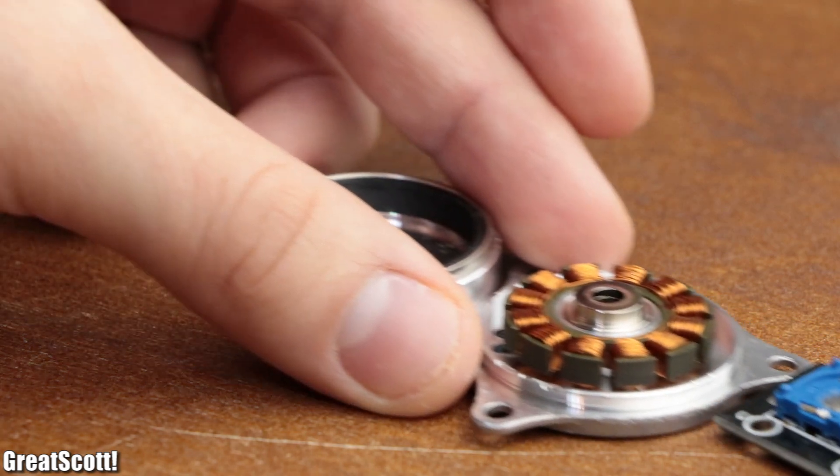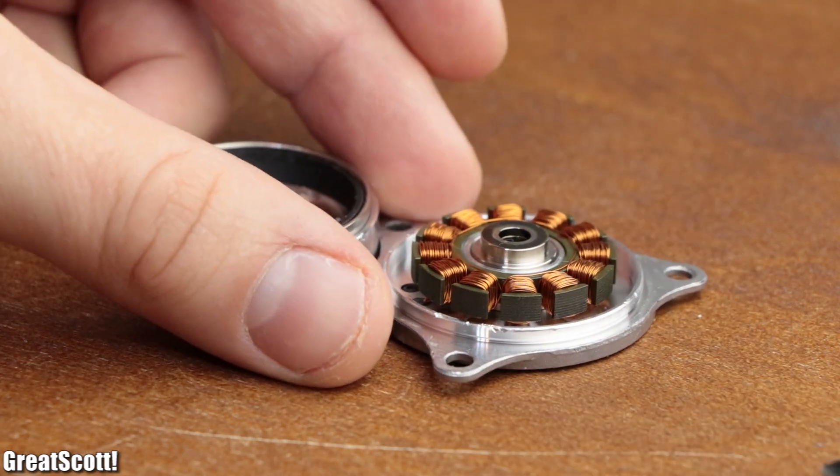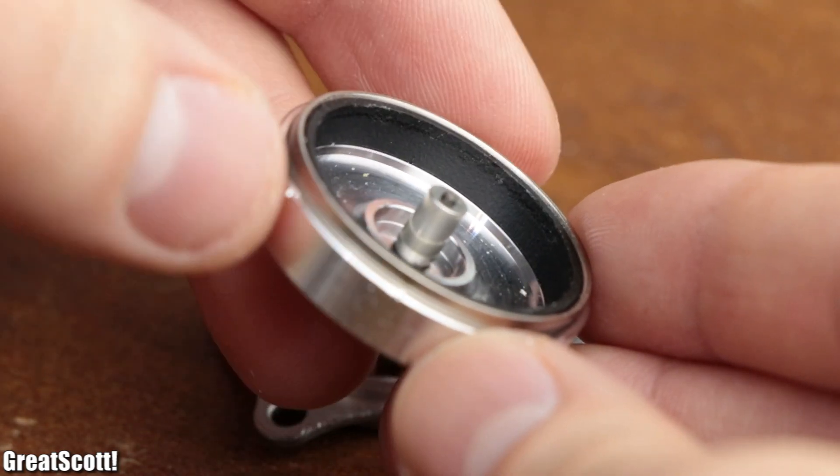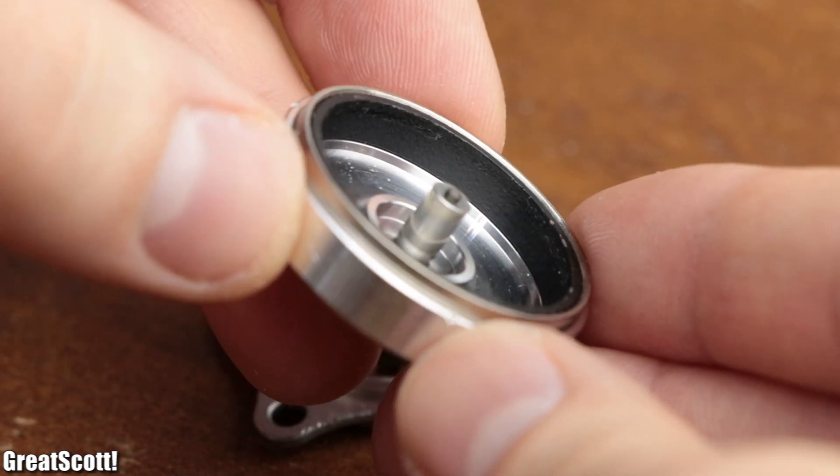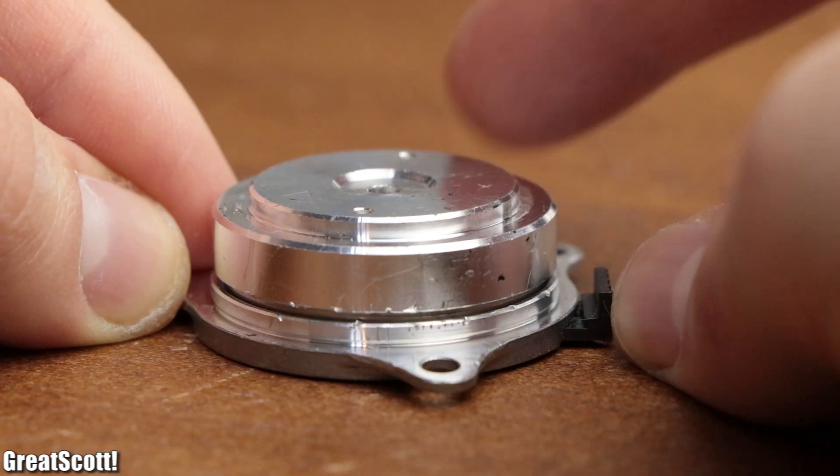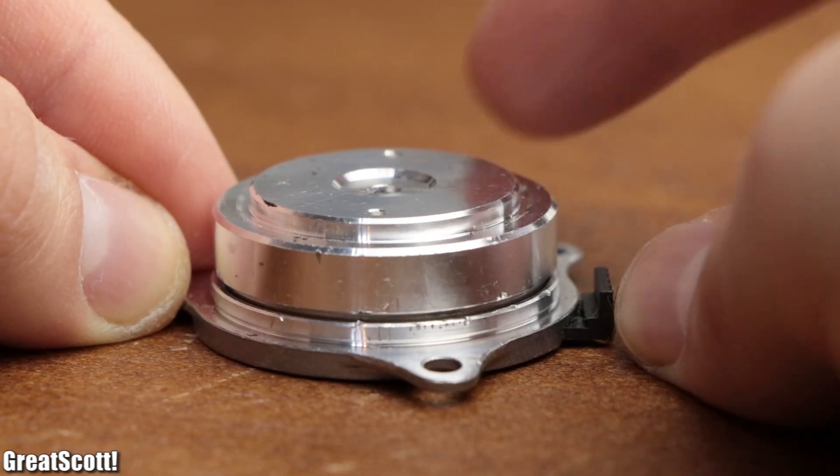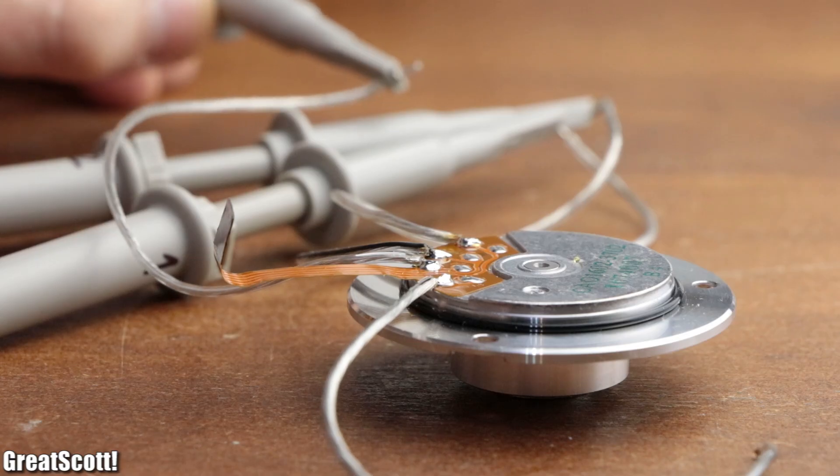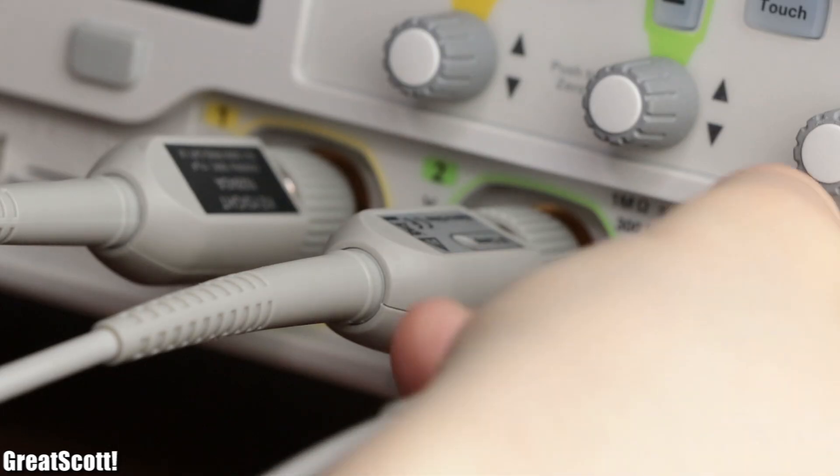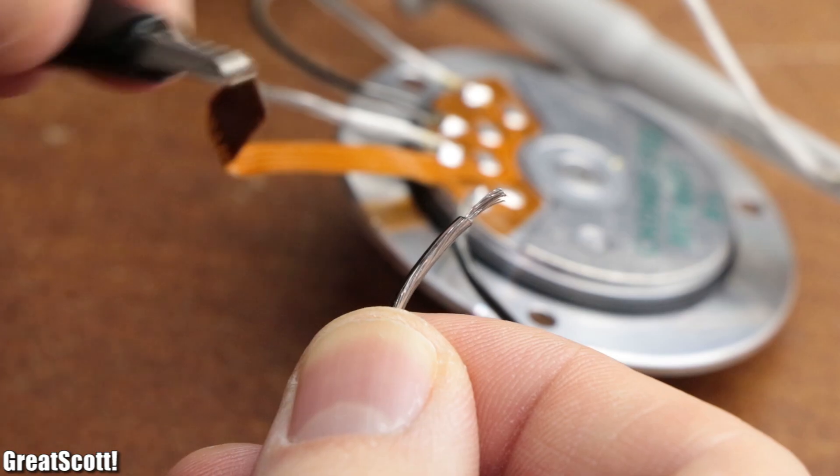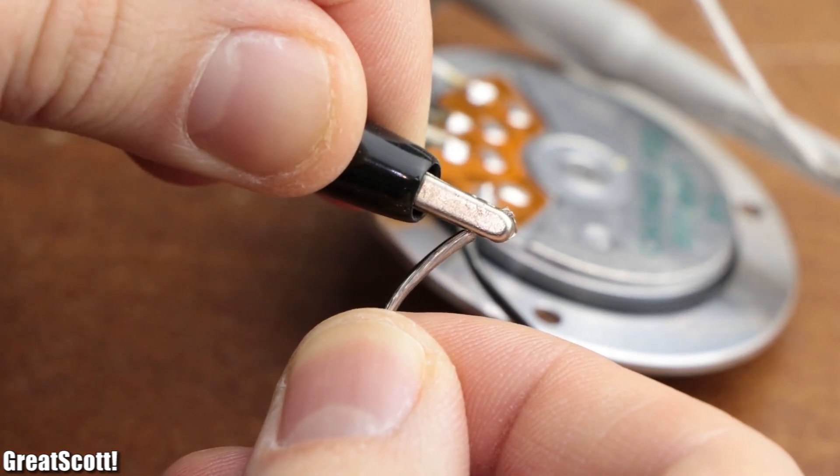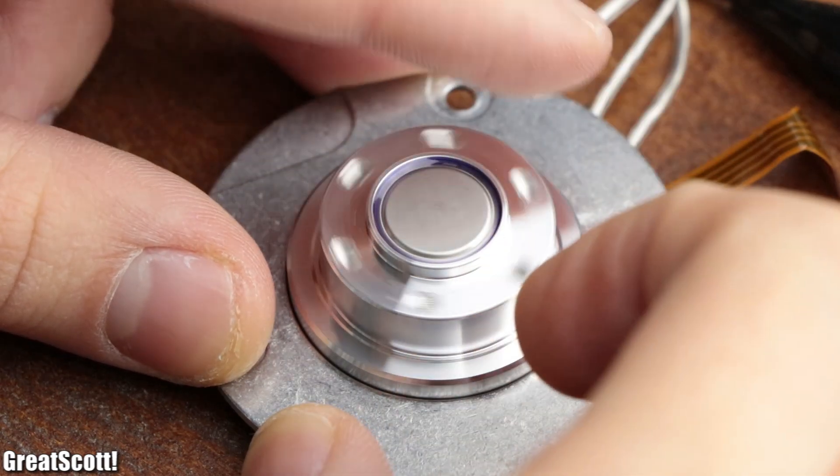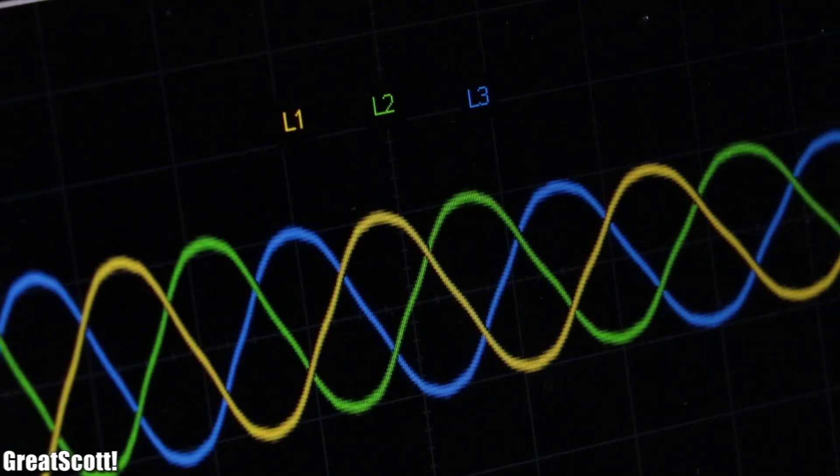A similar principle can be used when it comes to a BLDC motor. As we discovered earlier, its rotor consists of alternating polarized magnets that when rotated move alongside the coils of the motor. That means a voltage is induced into them, which we can observe if we connect each phase to one input of my oscilloscope and the reference voltage potential to the star point.